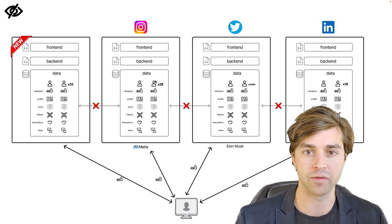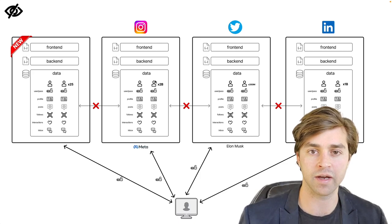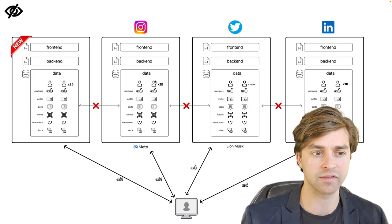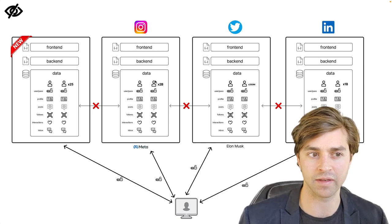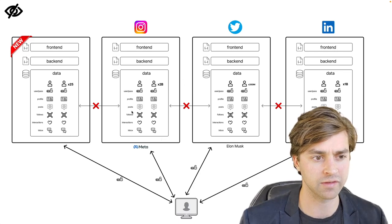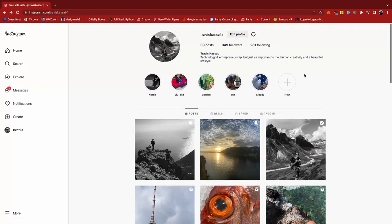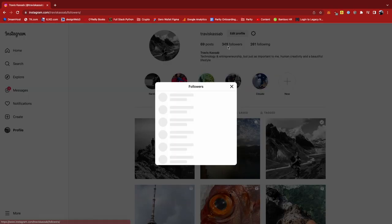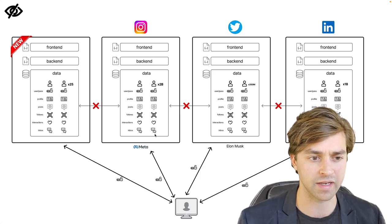The first problem with Web2 is that there is a lack of data privacy. Users by default do not own their data. Instead, application data is stored inside of centralized databases on a server that is owned by a parent company. So in the case of Instagram, Meta owns the Instagram servers and all user application data is stored on these servers. This includes things like my Instagram profile, all the posts I've made, the people I follow, all the interactions, the likes, comments that I've put on other posts, and even my direct messages. And this is a 2 billion person database.